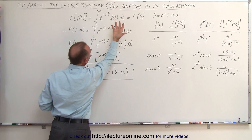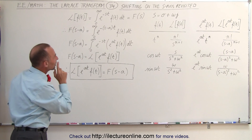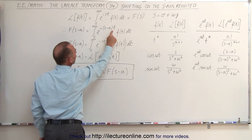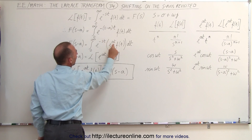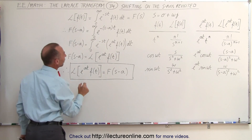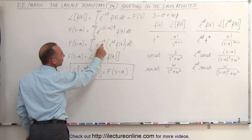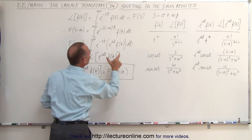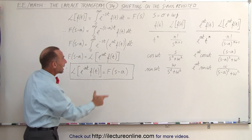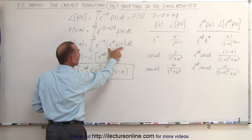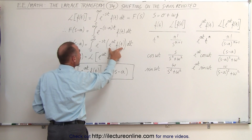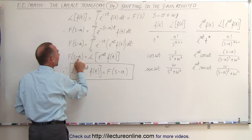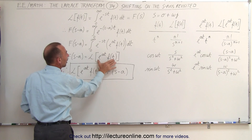We simply have that in the reverse order. What we're going to do here is factor out an E to the minus ST, which leaves E to the A T, and we place that over there. So now we have the integral of E to the minus ST times E to the A T times the function of T. This is simply still a function of T. So if we call this the function of T, then if we take the inverse Laplace transform, we get F of S minus A is equal to the Laplace transform of this.